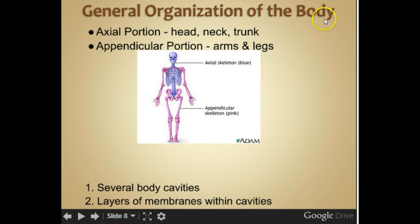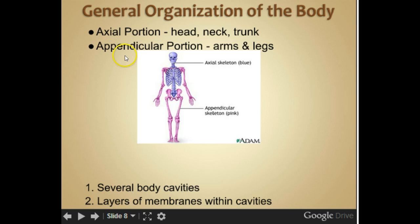General organization of the body. We have the axial portion, which is the head, neck, and trunk — the spine and ribs are in that. Then we have the appendicular portion, which are the arms and legs, and also the pelvic girdle as part of that. There are several body cavities and layers of membranes within the cavities.